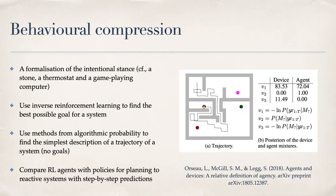A thermostat has two equally explanatory interpretations: a heuristic one (when temperature is too low, heat up; too high, cool down) and a goal-directed one (the thermostat is trying to regulate temperature toward a set point). Intuitively, both explanations seem good, but the second feels more agent-like. For a game-playing computer, explaining individual neuron activations doesn't tell us much, whereas saying 'it's trying to beat the best score' is far more informative.